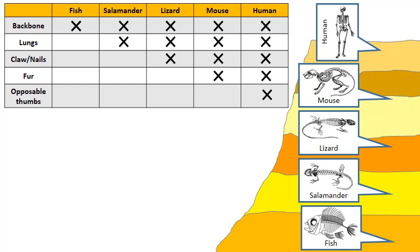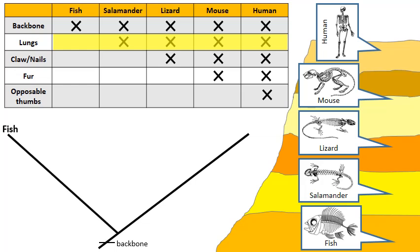Now you're going to start to see why this was important. To get started with my cladogram, I'm going to draw a straight line from the bottom angling upward, and I'm going to use this as my main branch. One thing I look for is what they all have in common — all five have a backbone. Then I need to find which one is not like the others. The fish are not like the others because the fish don't have lungs, so I'm going to make my first branch separate the fish, and everything above that branch is labeled with lungs.